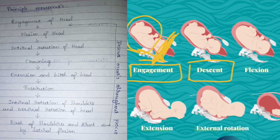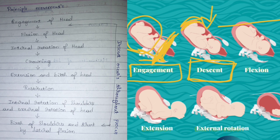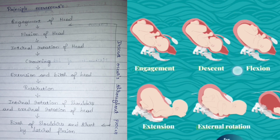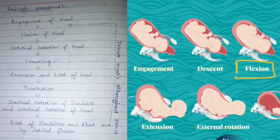The next step is descent. Descent is a process seen throughout the whole labor — from here onwards in every step you can see descent. Descent is the movement caused by contraction and relaxation of the uterine muscles, which makes the baby move and come out. That motion is known as descent. It is specifically mentioned here because from this point the descent begins.